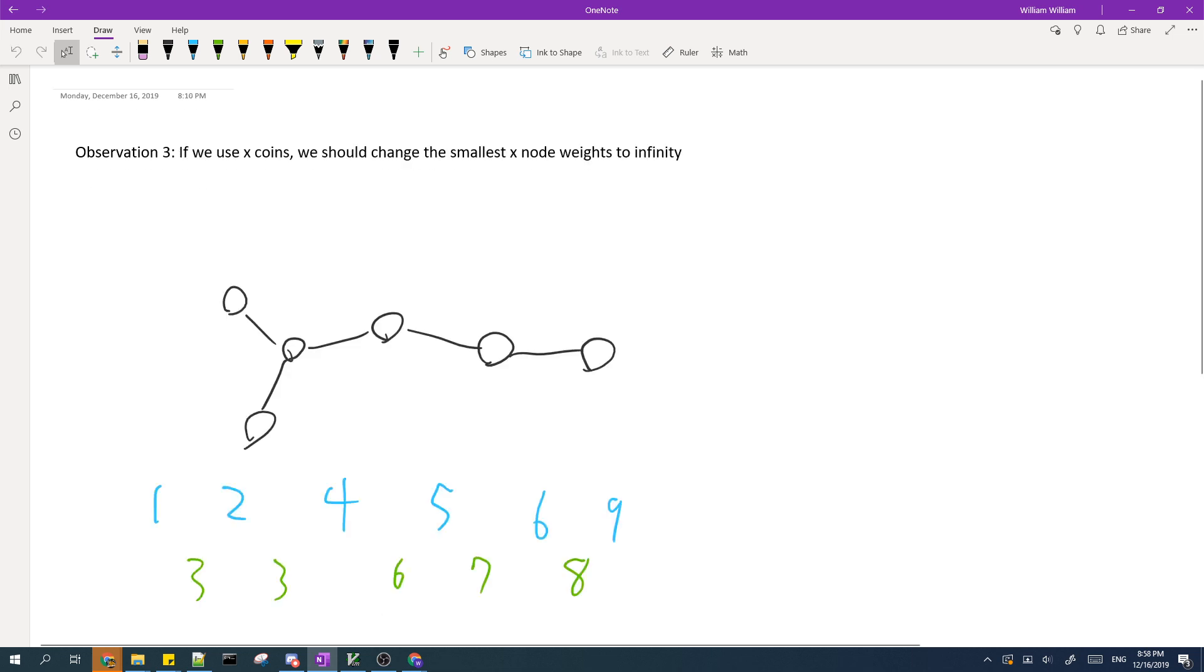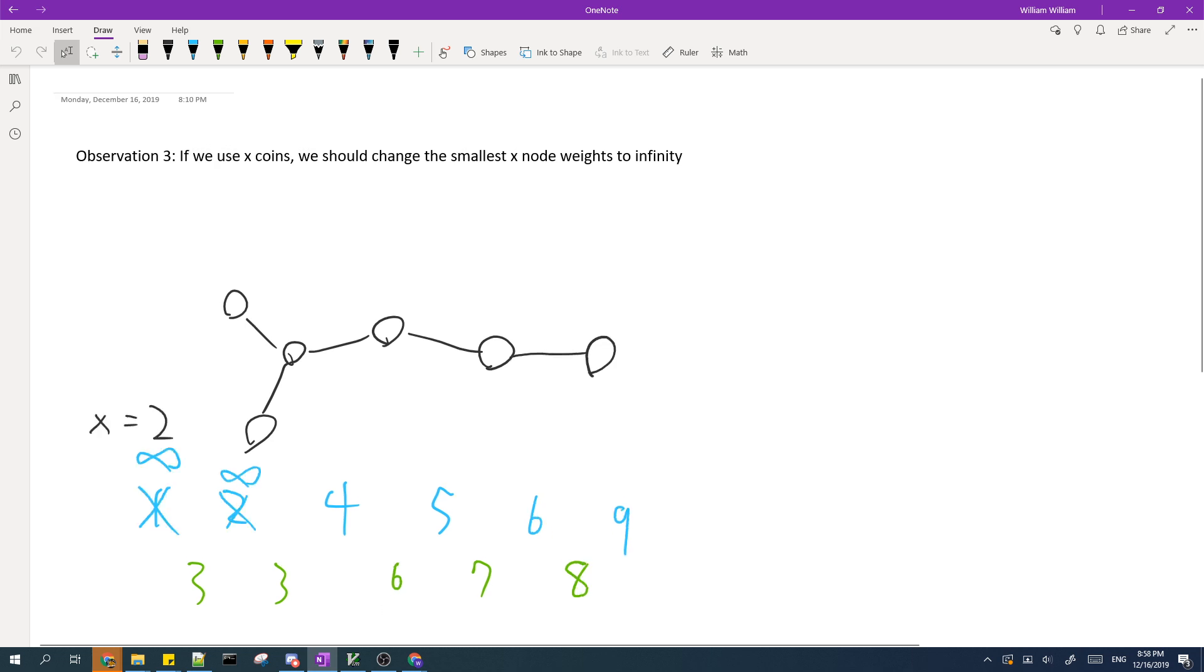The third observation is that if we use X coins, then we should change the smallest X node weights to infinity. So for example, if X equals 2, then we should just change the smallest 2 over here into infinity. And this is also pretty intuitive.